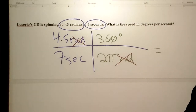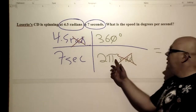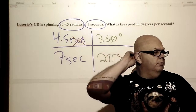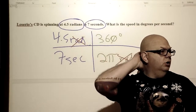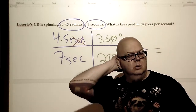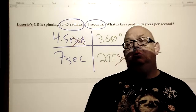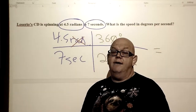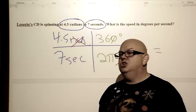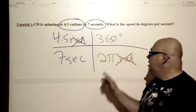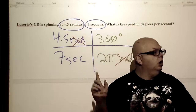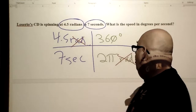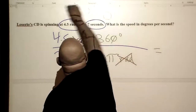You'll notice you get pi on the bottom. That's fine — if you're in that situation, you can take pi to be 3.14 and multiply it through, and that will work.